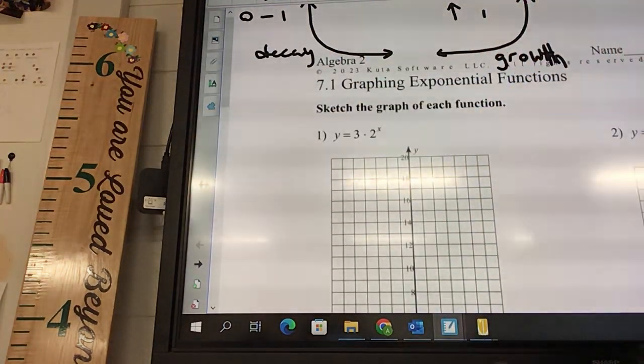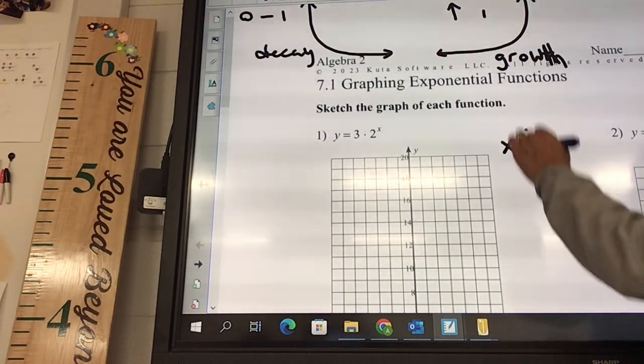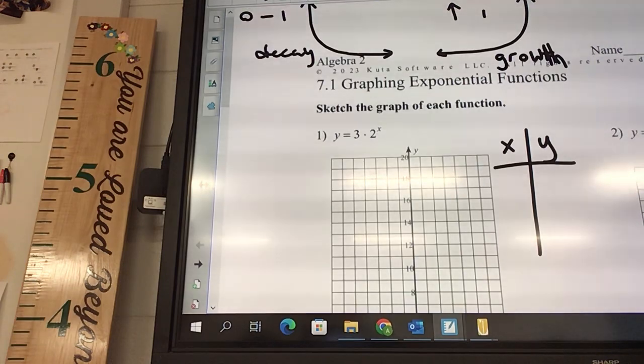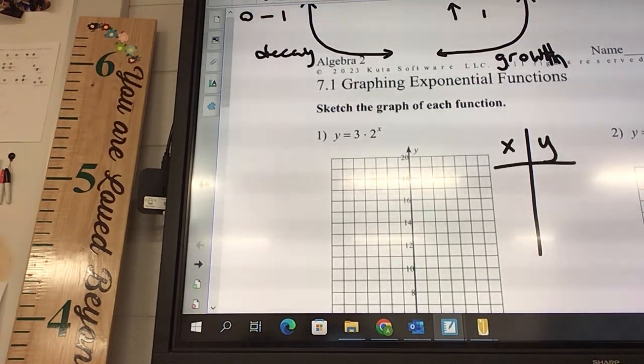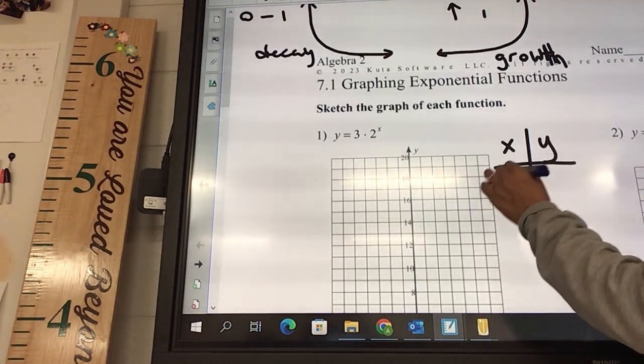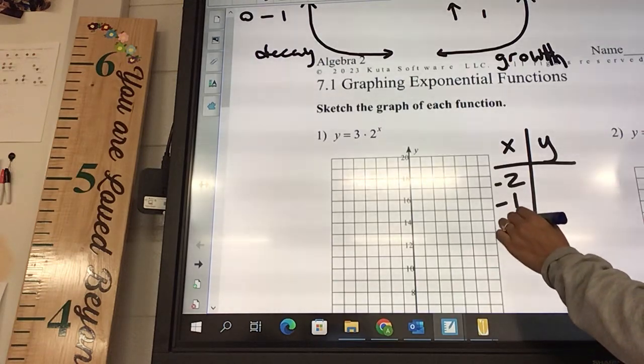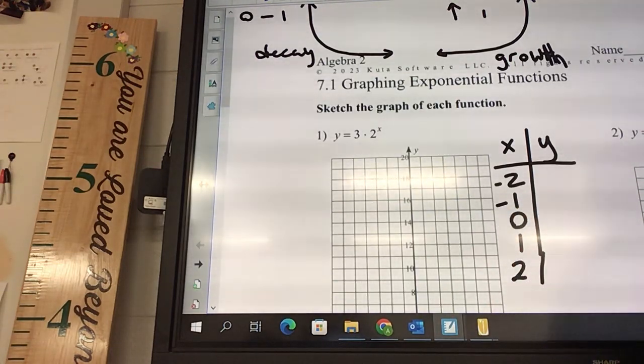So what you're going to do, in order to graph things, you're going to make what we call an XY chart. So you're going to say X and Y. You're going to make an XY chart and you're always going to do the same five numbers. It's going to be negative 2, negative 1, 0, 1, and 2. We're always going to write those numbers.